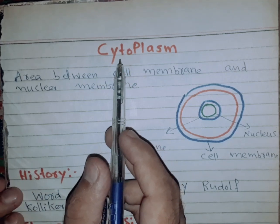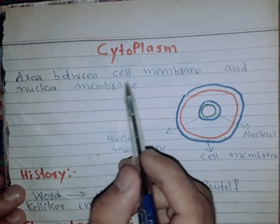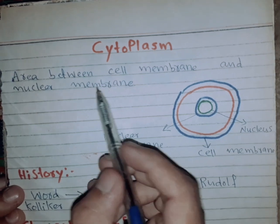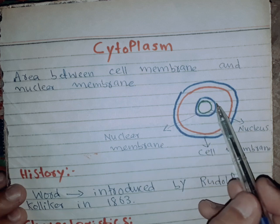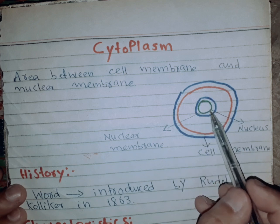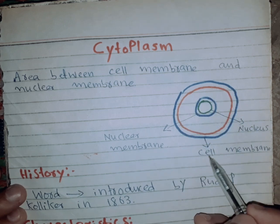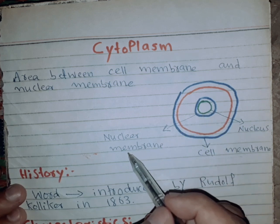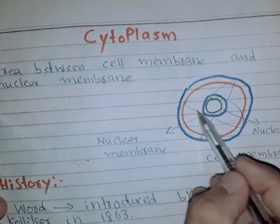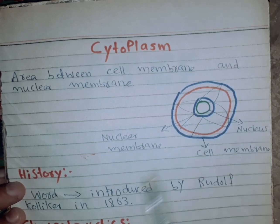The topic is cytoplasm. Cytoplasm is a very important topic. It is the area between the cell membrane and the nuclear membrane. Let's suppose that we have a diagram of animal cells. The area between the cell membrane and the nuclear membrane is called cytoplasm.